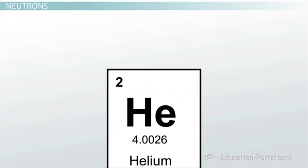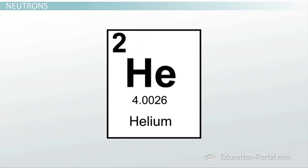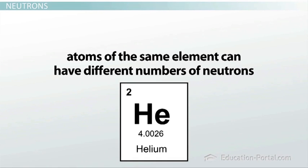Remember that all atoms of the same element have the same number of protons. Does this mean that they have the same number of neutrons? Nope. Atoms of the same element can have different numbers of neutrons. These atoms with the same number of protons but different numbers of neutrons are called isotopes.